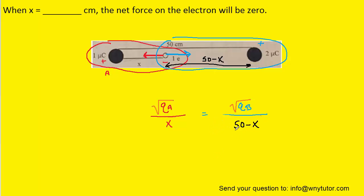Now, we could perhaps go ahead and cross multiply. So when we cross multiply in this direction, we're going to have the square root of QB times x. And that will equal the square root of QA multiplied by 50 minus x.